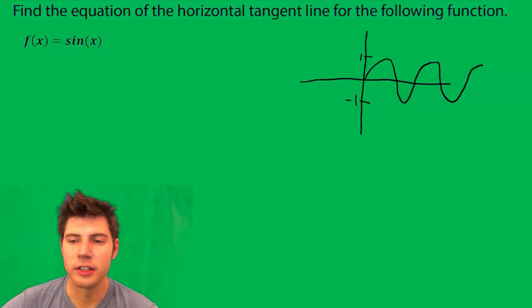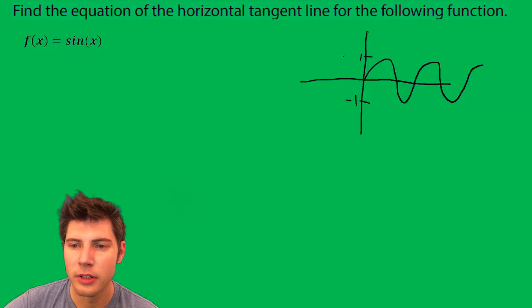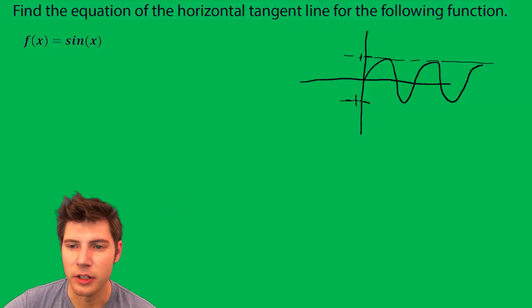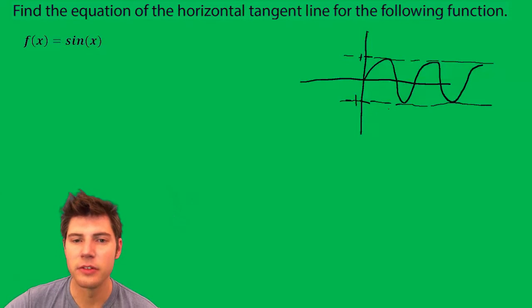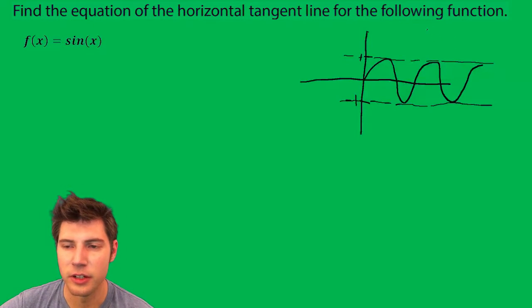So a tangent line, there's actually two of them. There's this one here and there's this one here. So without even doing any calculus, we can already know the answers are going to be y equals 1 and y equals negative 1.